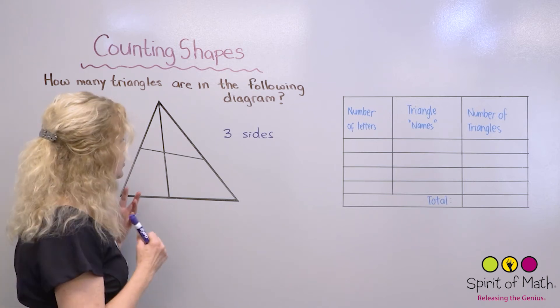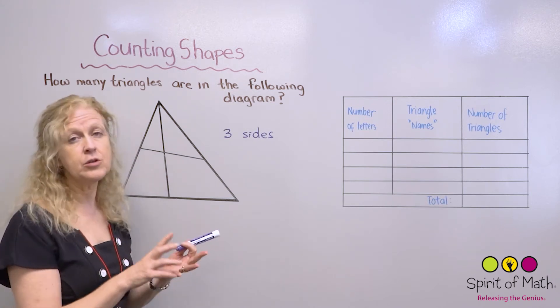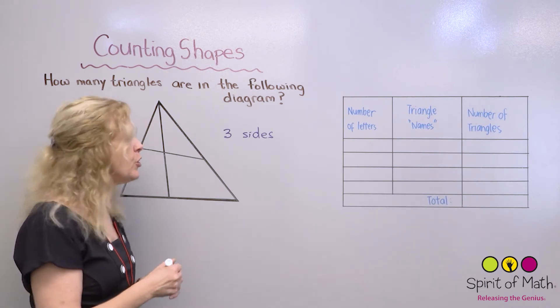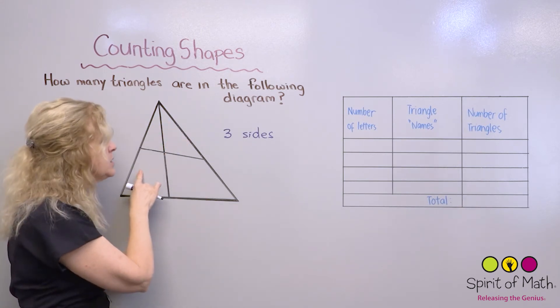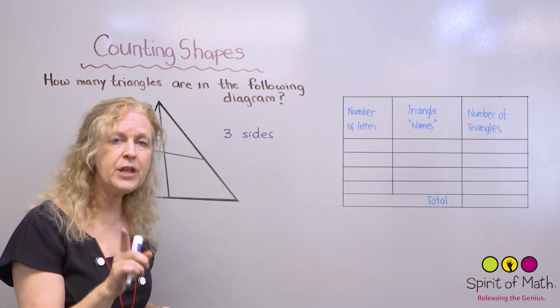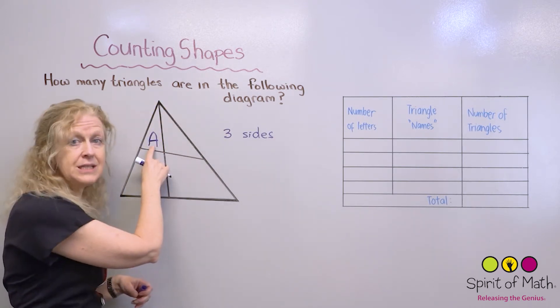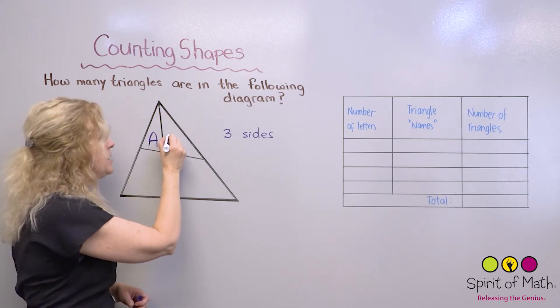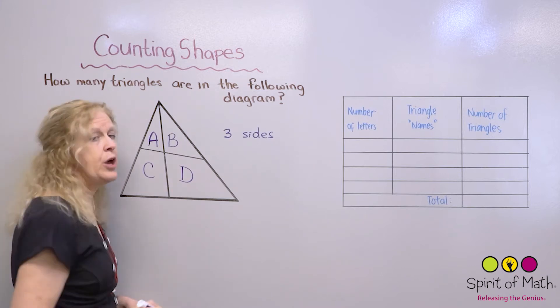I'm going to teach you how to use that table and how to organize your information. And then you'll know for sure or almost for sure that you've got all the triangles and you haven't forgotten one. So the very first thing that you can do so that you don't forget things is let's label this. And when you label it, you label it with a letter or a number or a color. And what we're going to do is label today with a letter.